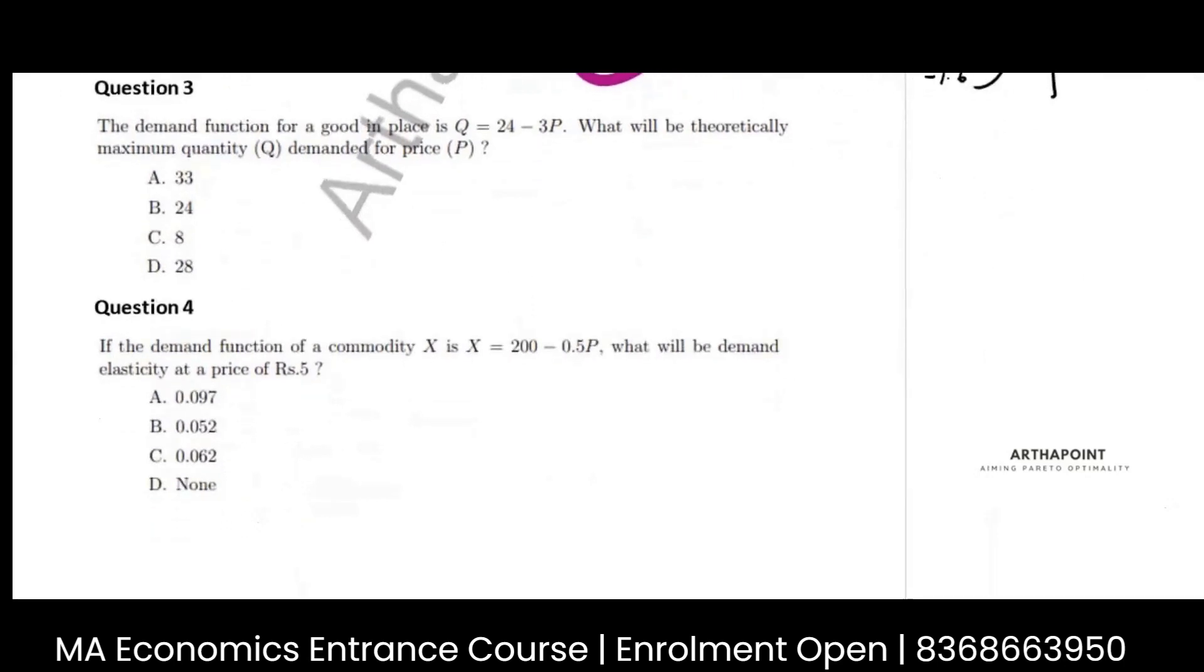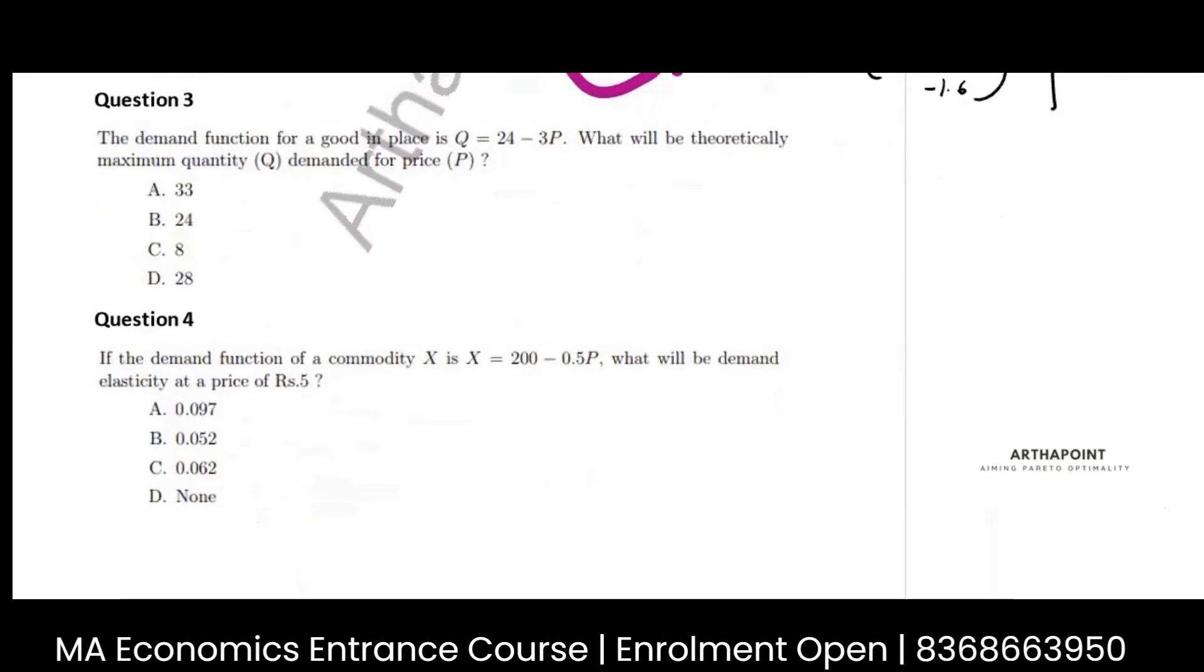When you want to find the maximum quantity demanded, what can happen to the price? At max it can become zero, it cannot be negative. When the price is zero, which means the good is available for free, then you will have maximum quantity. So Q will be 24 minus 3 times 0, which will be 24. The answer is B.